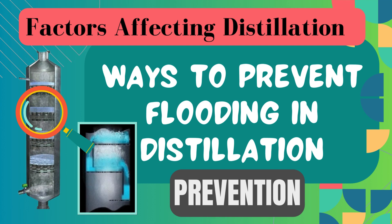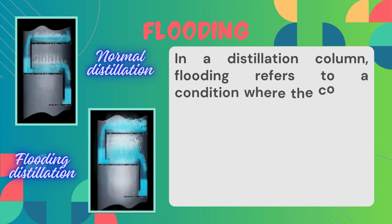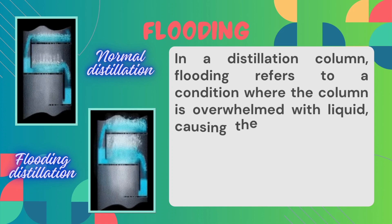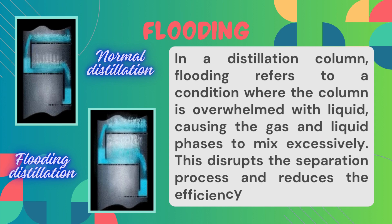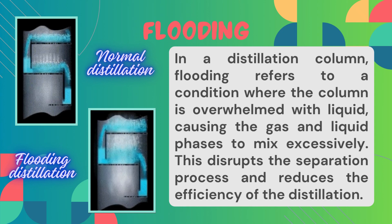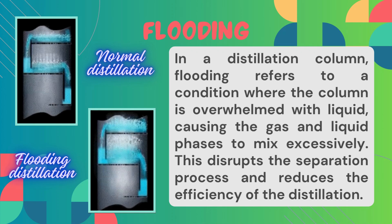Before we start with the preventive measures, let's first talk about what flooding is. In a distillation column, flooding refers to a condition where the column is overwhelmed with liquid, causing the liquid and gas phase to mix excessively. This disrupts the separation process and reduces the efficiency of distillation. Flooding negatively impacts separation efficiency, leading to reduced product purity and increased energy consumption. It also causes mechanical damage to the column if not addressed properly.